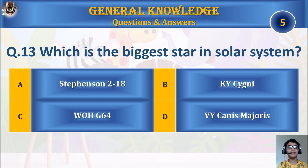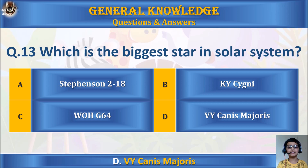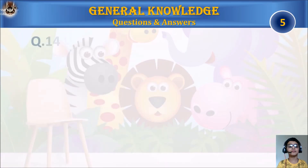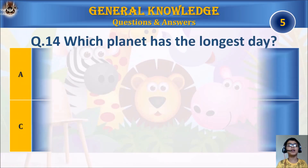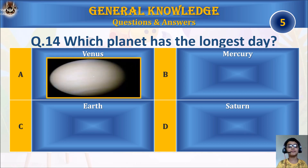Question 13: Which is the biggest star in the solar system? A. Stephenson 2-18, B. KY Cygni, C. WOH G64, or D. VY Canis Majoris? Your time starts. The answer is D. VY Canis Majoris.